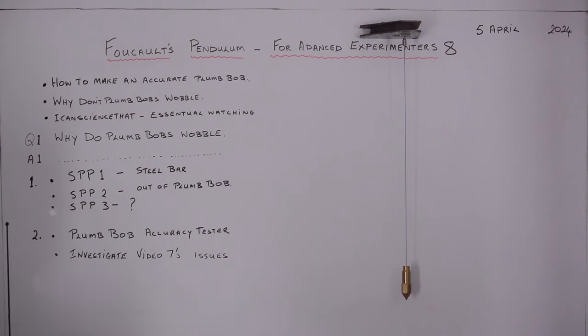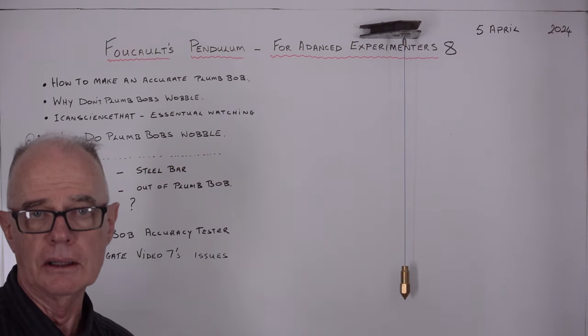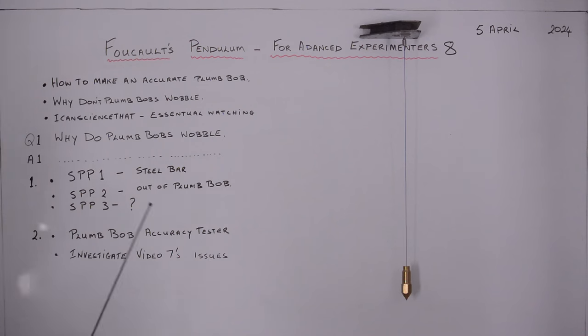Now if you're watching video 7, you realize I had a problem with my static pendulum number 2, which was an out of plumb plumb bob. And I couldn't figure out why it should wobble, or why it didn't wobble, and if you go through that video you'll understand what my problem was.